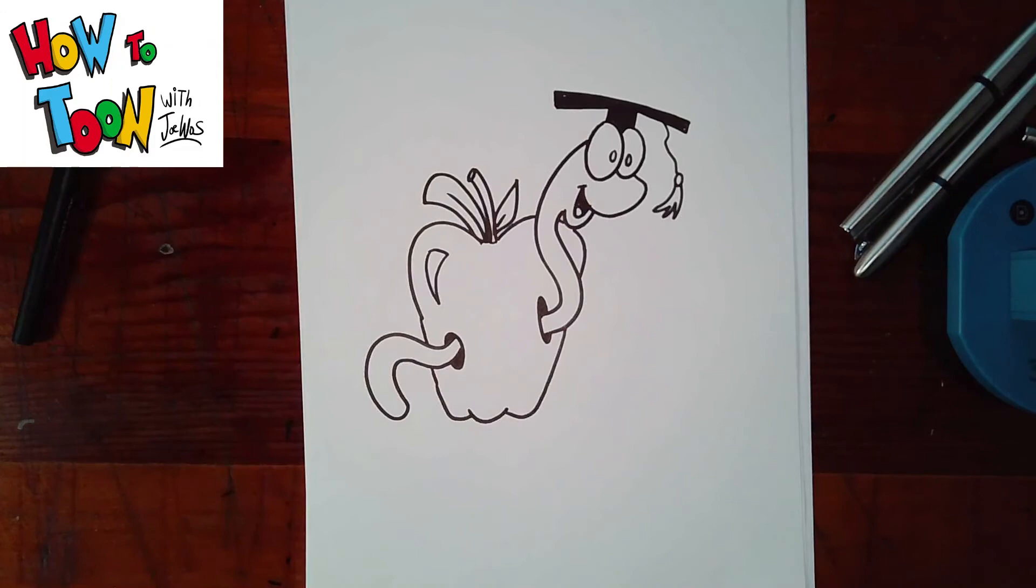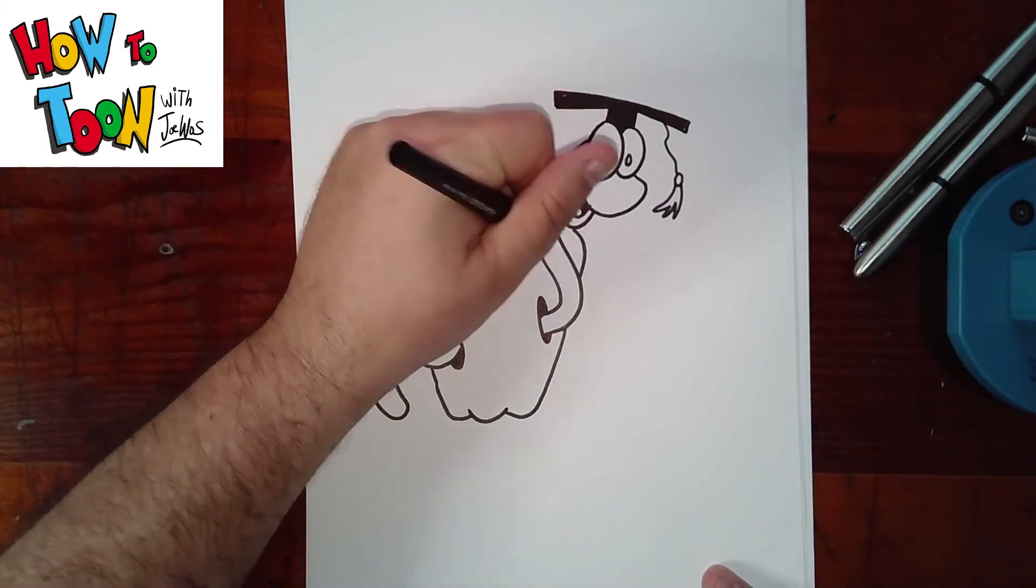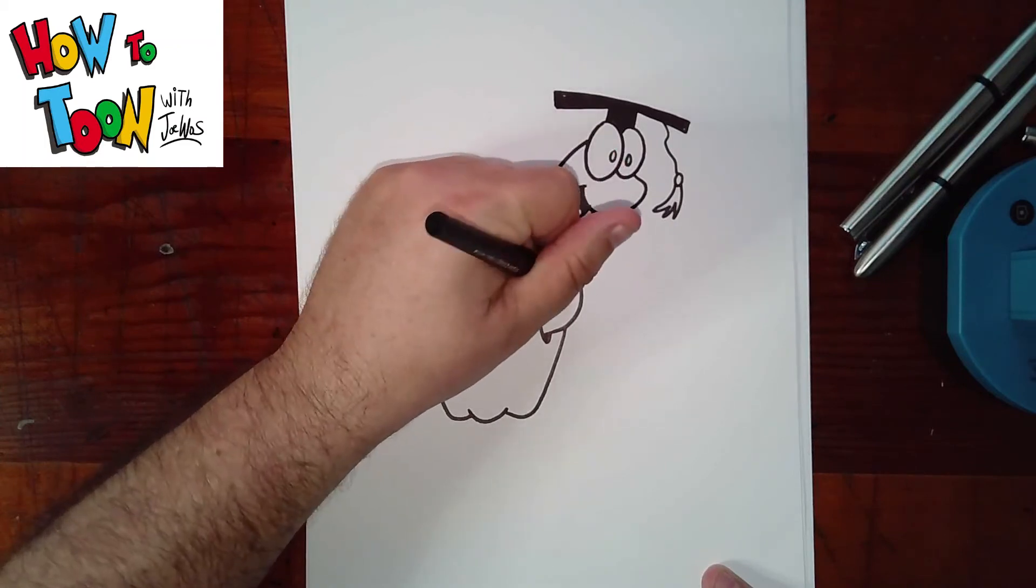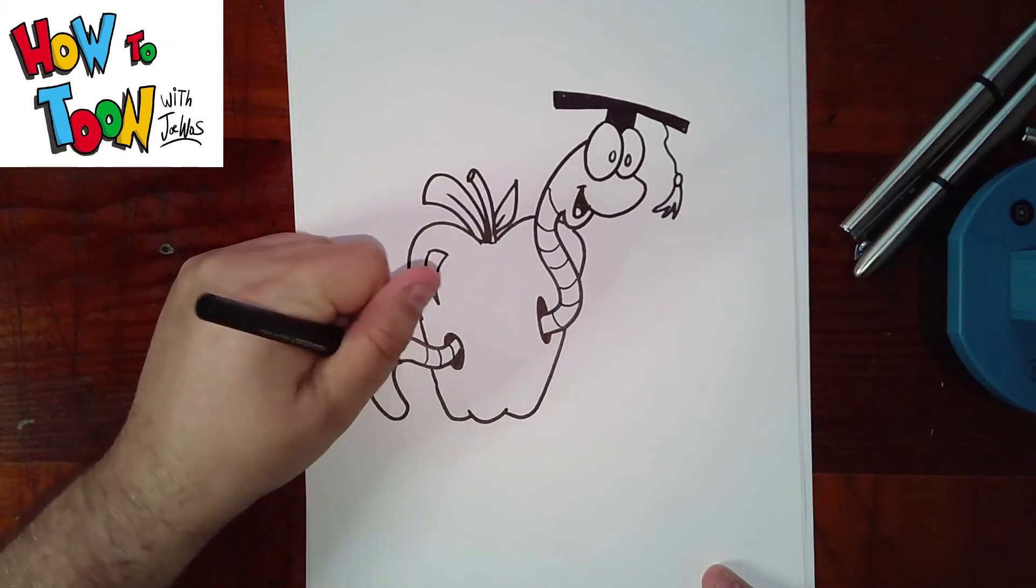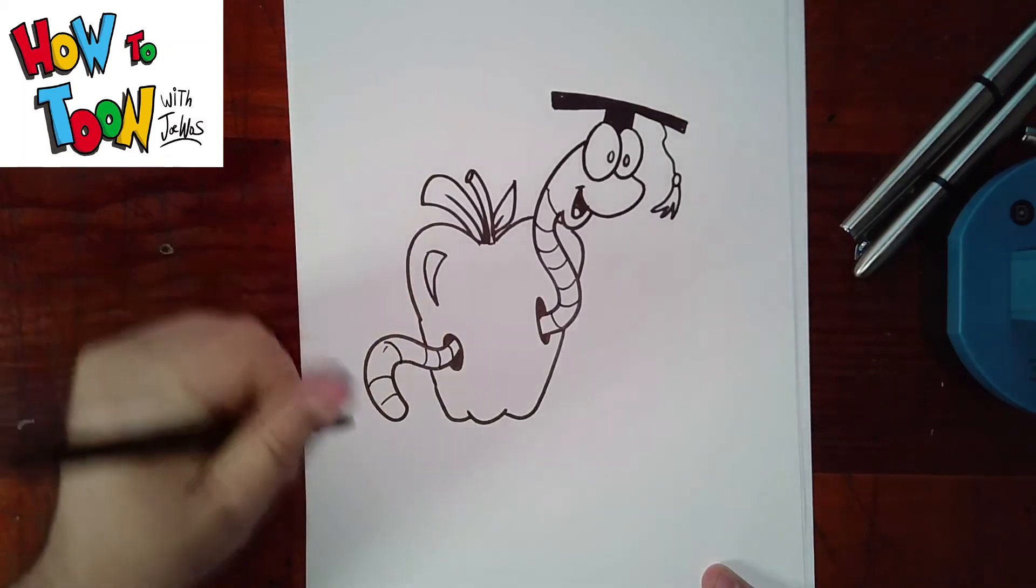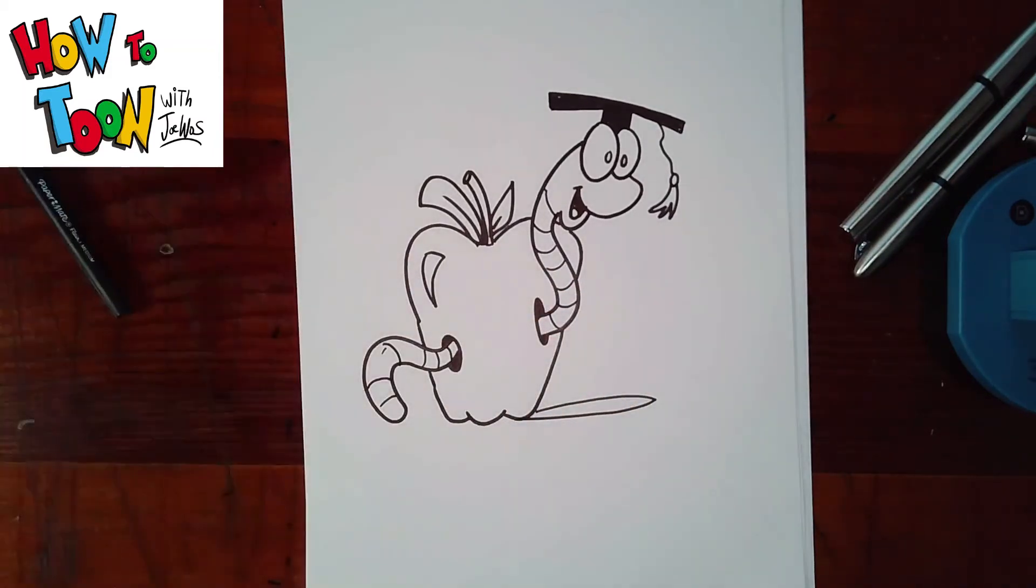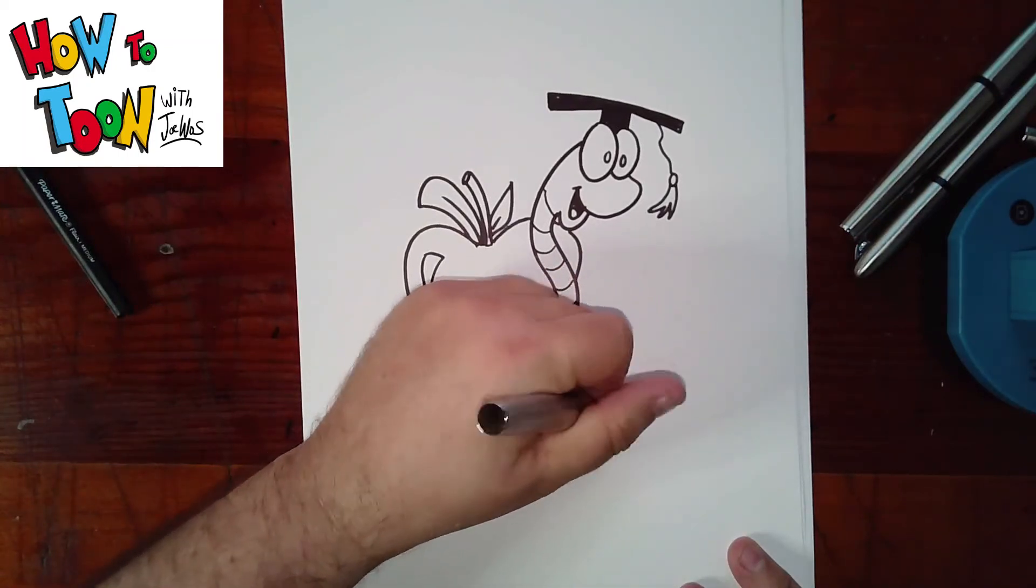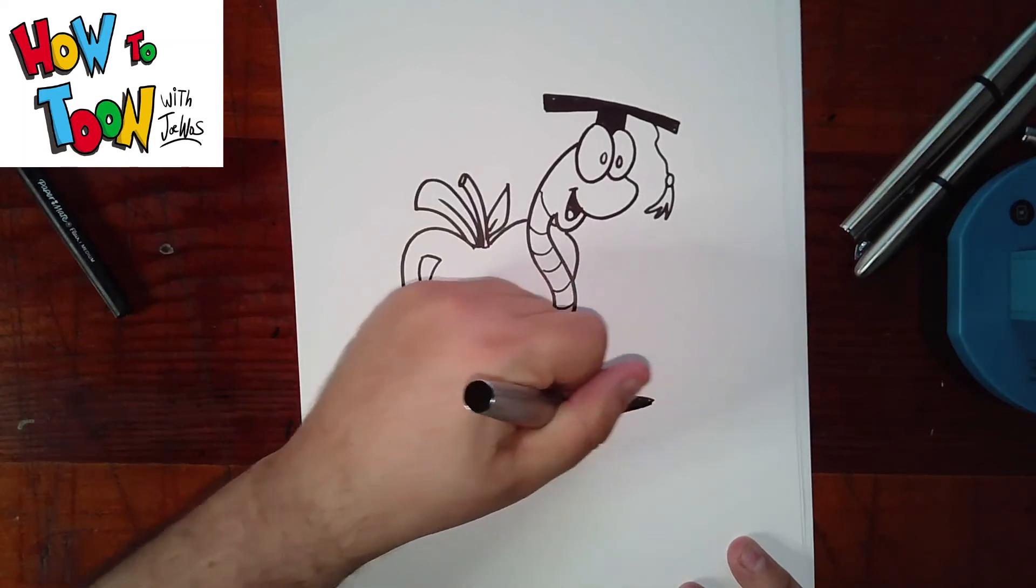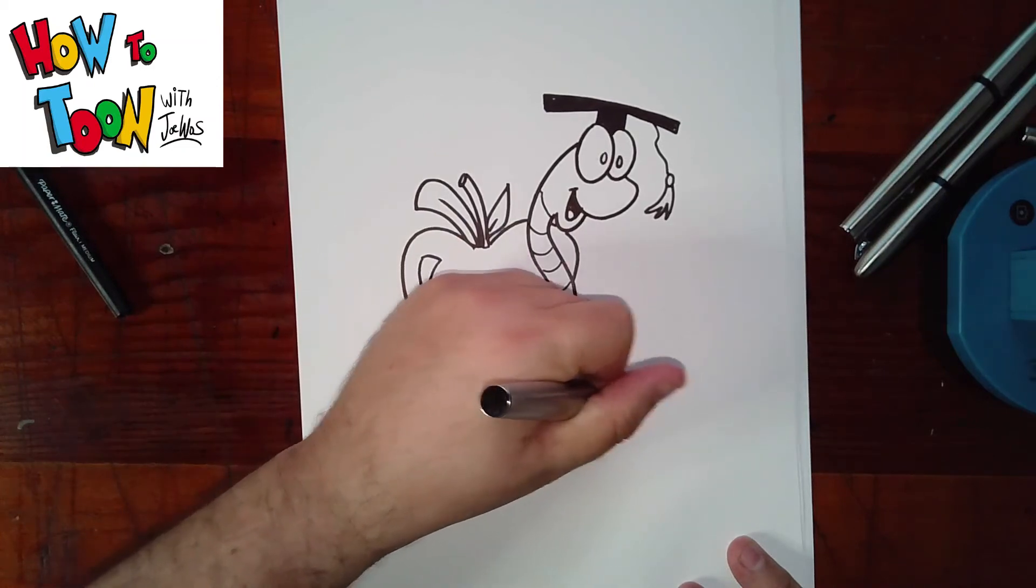Now I would color that in a nice red. And then I'm going to add just a little bit of texture to the worm by adding some stripes. And then I'm going to add a shadow right under the apple.